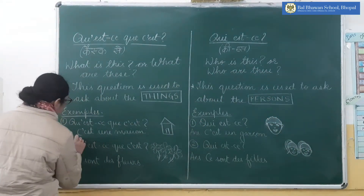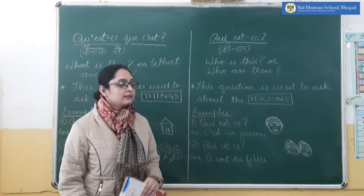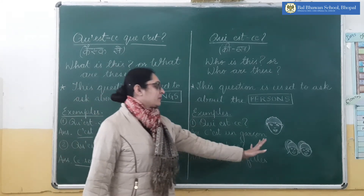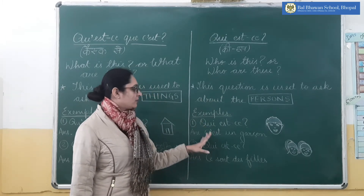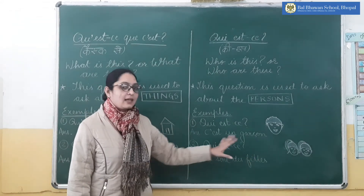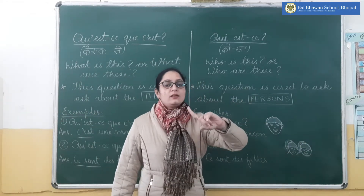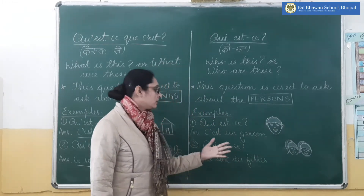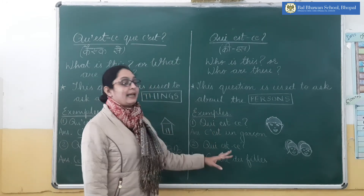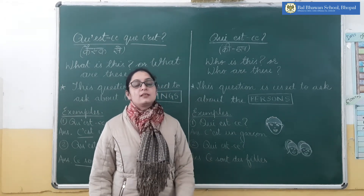One more thing: 'c'est' means 'this is' and 'ce sont' means 'these are'. Now, 'who is this' and 'who are these'? I have made the face of a boy in the first question. Who is this? So you will say 'c'est un garçon' — this is a boy. Next question, there are two faces, more than one person. The question remains the same but the meaning changes — 'Kes' means 'who are these'? So the answer will be 'ce sont des filles' — these are girls.